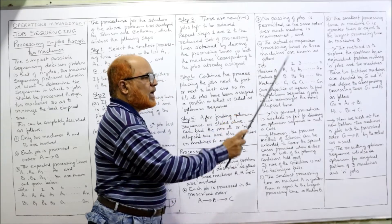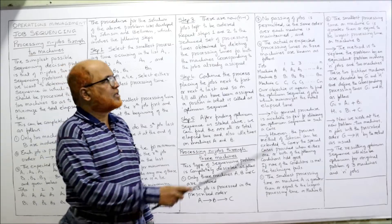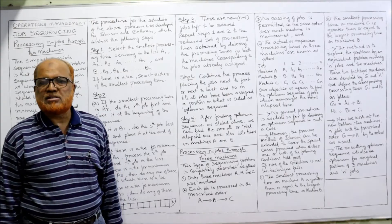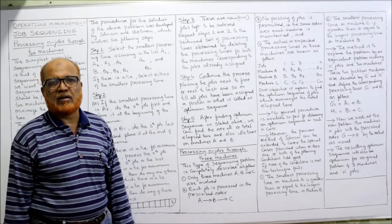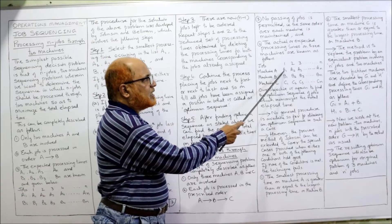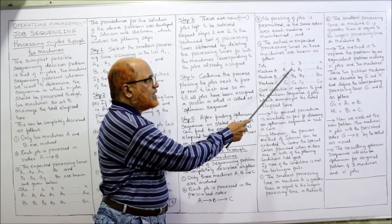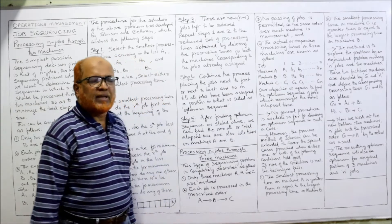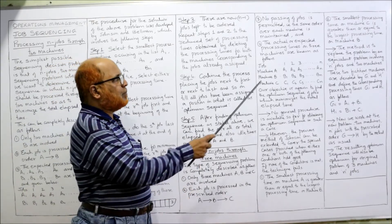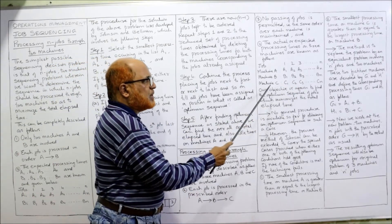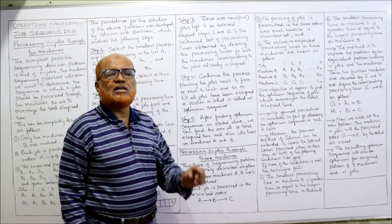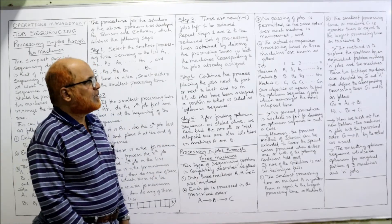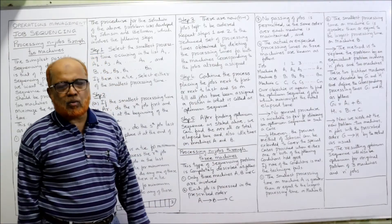The actual expected processing times on the three machines are known. We have n jobs — 1, 2, 3, 4 up to n — and for each job the processing times on machine A, machine B, and machine C are given. Our objective is again to find the optimum sequence of jobs such that the total elapsed time is minimum, just as in the two-machine case.